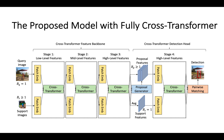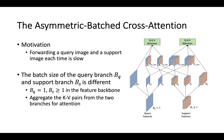In our model, the input sizes of the two branches can be different. Since forwarding a query image and a single support image at a time is slow, we propose symmetric-batched cross-attention to calculate the attention between the query image and all support images of the same class at one time, which can largely reduce the processing time.